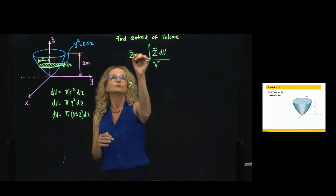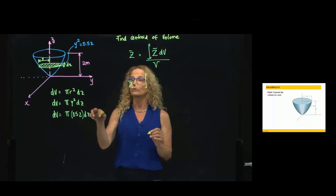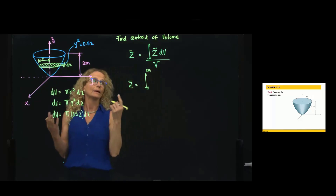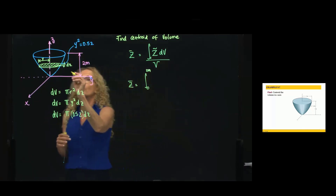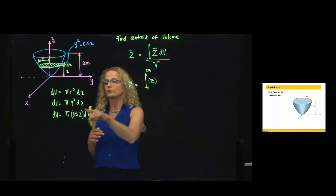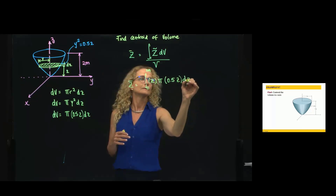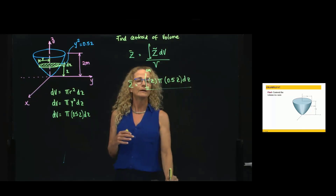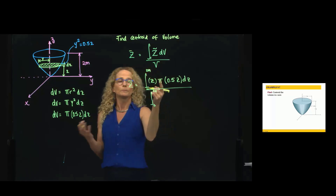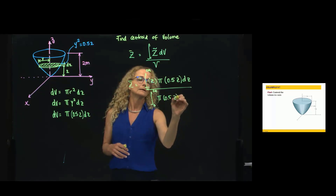So my C̄, which is my centroid, will use the limits of integration for the variable I choose to integrate, which is 0 to 2. The centroid of that coin is located at C, so I write C in the numerator times my differential of volume, which is π 0.5C dC. That will be divided by my volume, which is another integral from 0 to 2 meters — and now I only integrate the differential of volume, which is π 0.5C dC.